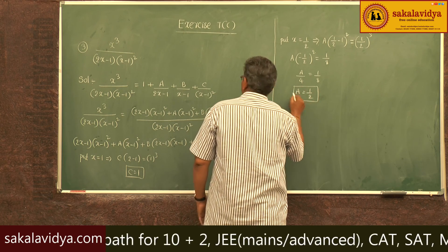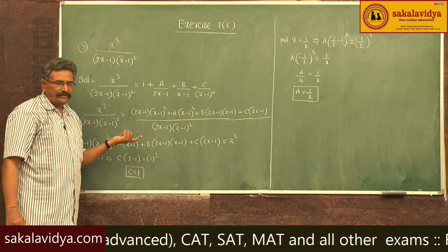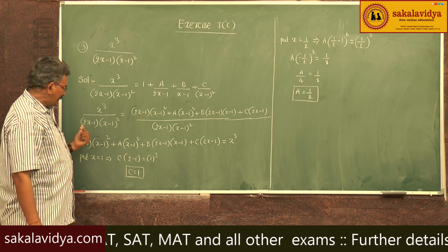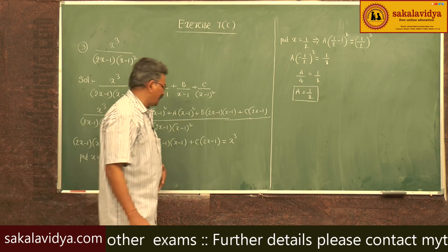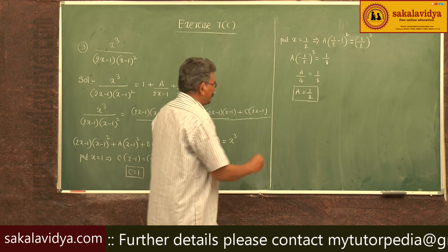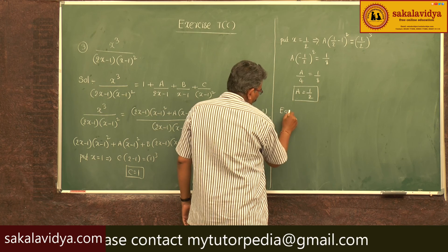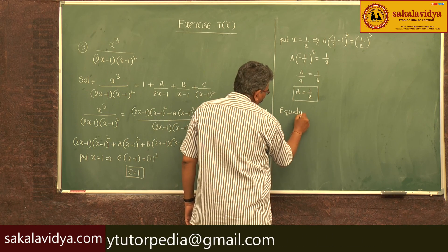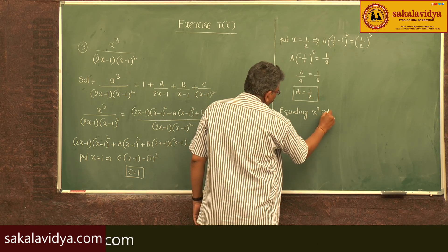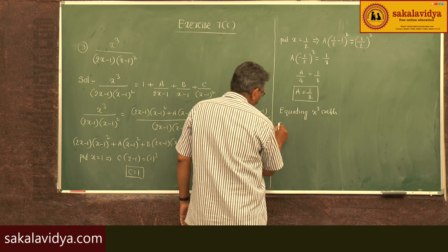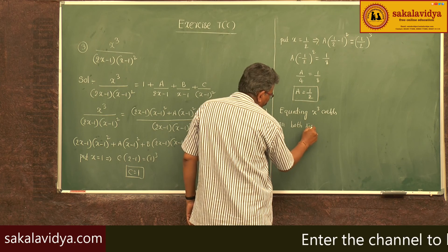Now we know the A and C values, but we have to find the B value. In order to find B, it is better to compare the x cube coefficients on both sides. Equating x cube coefficients on both sides.